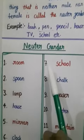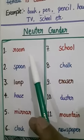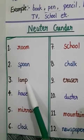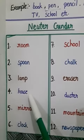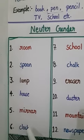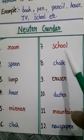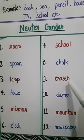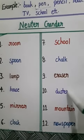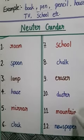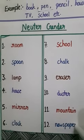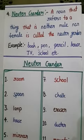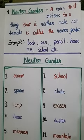More examples of neuter gender: room, spoon, lamp, house, mirror, clock, school, chalk, eraser, duster, mountain, newspaper. There can be many more examples of neuter gender. Write 10 more examples of neuter gender on your own.